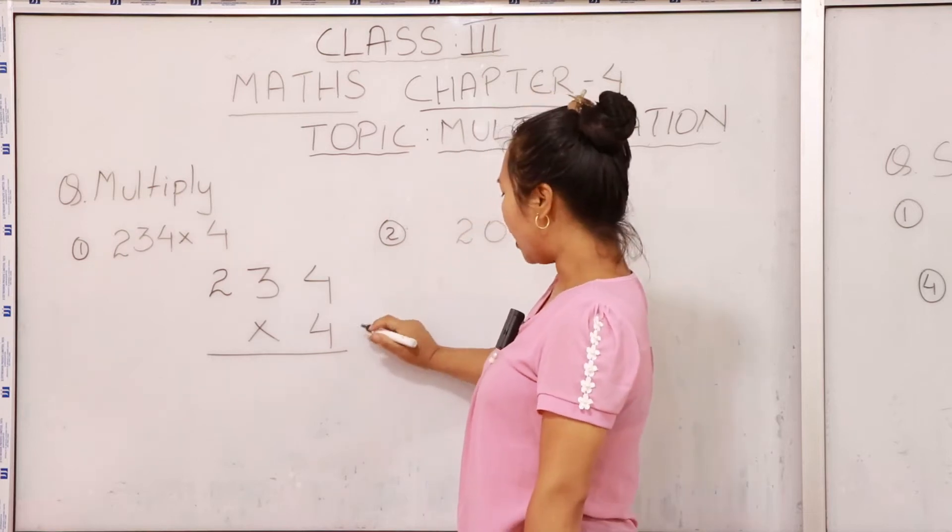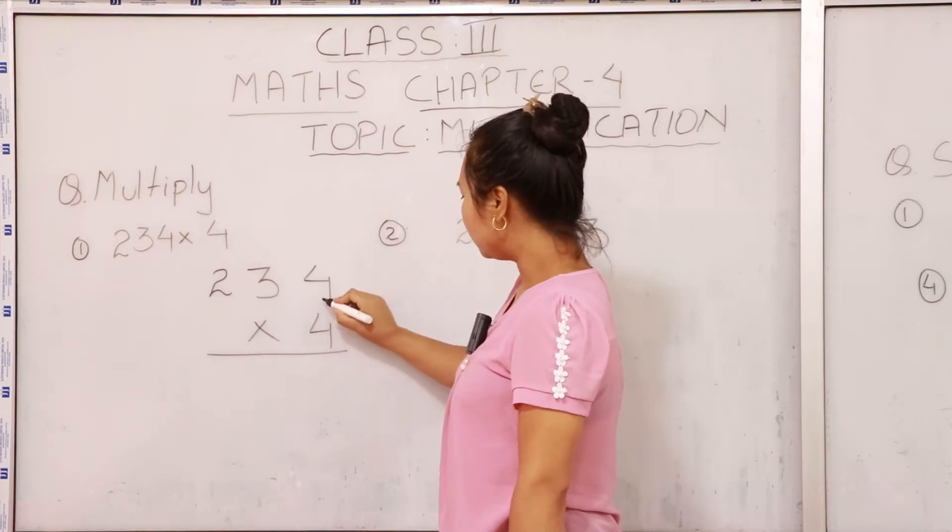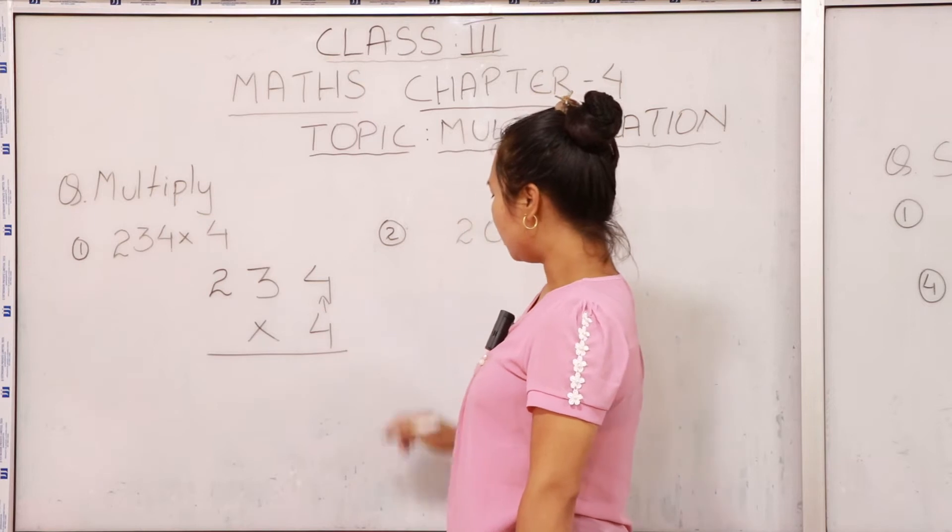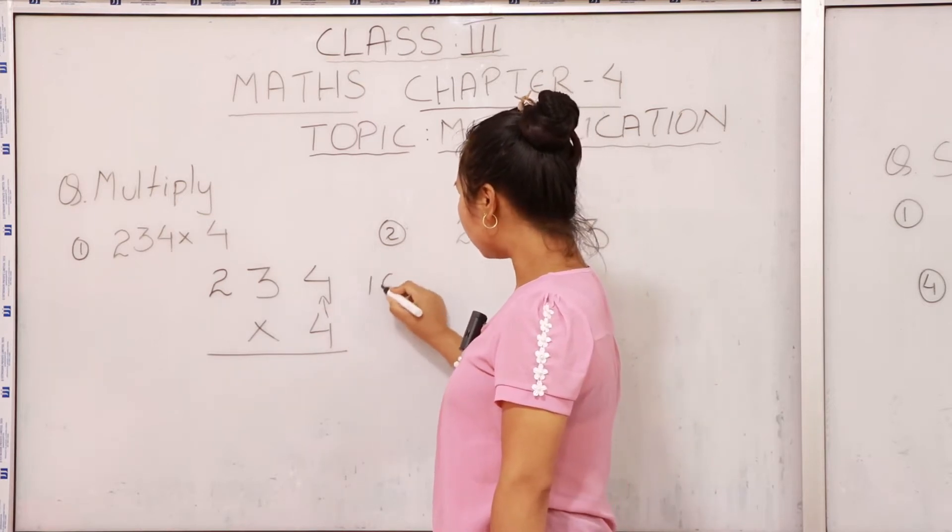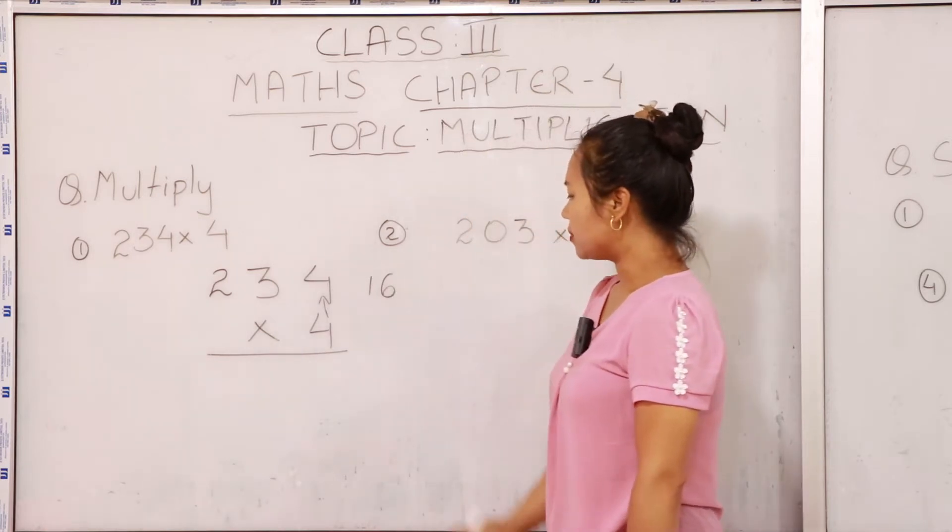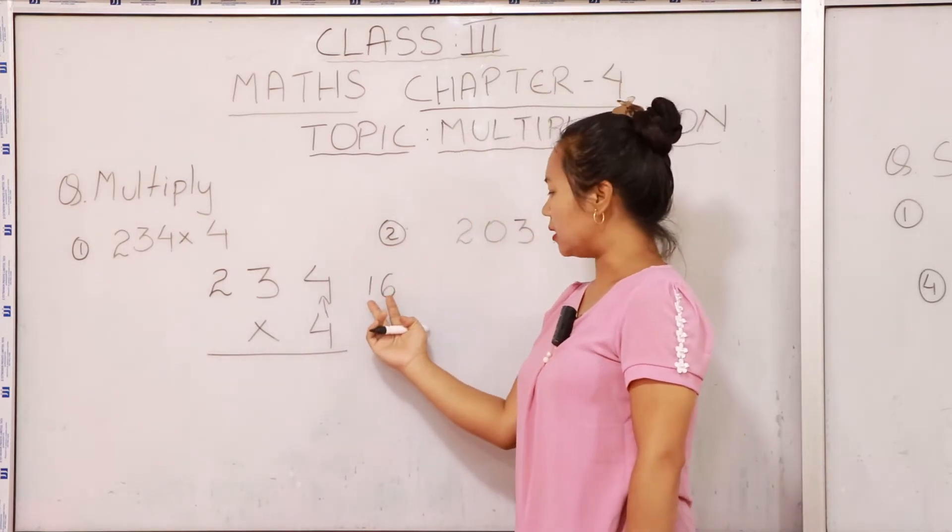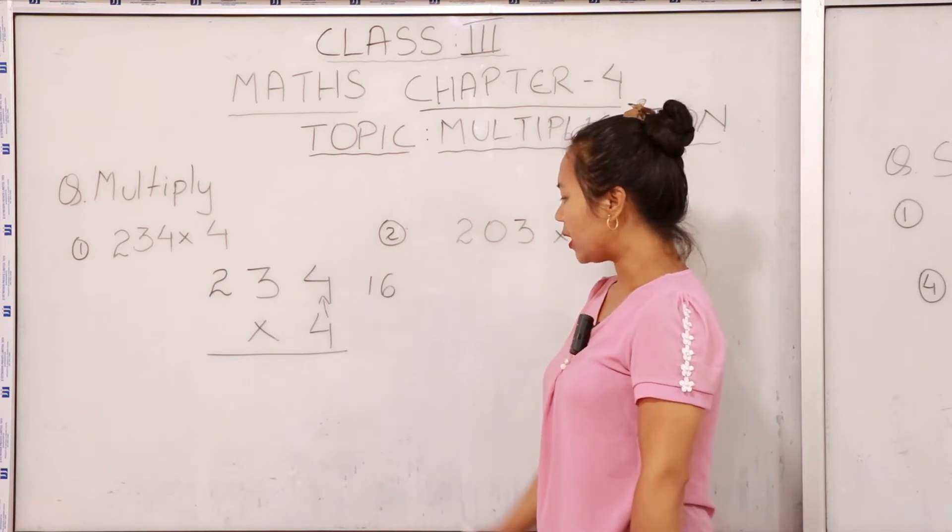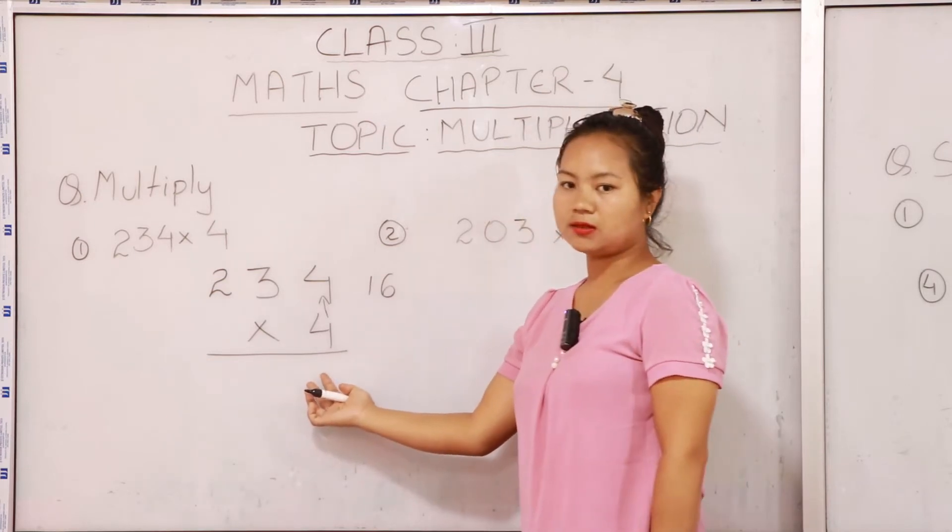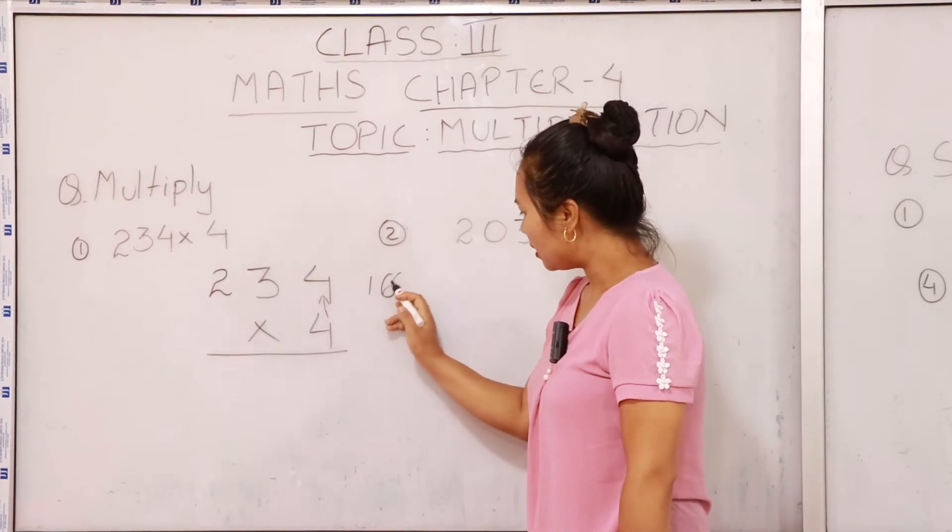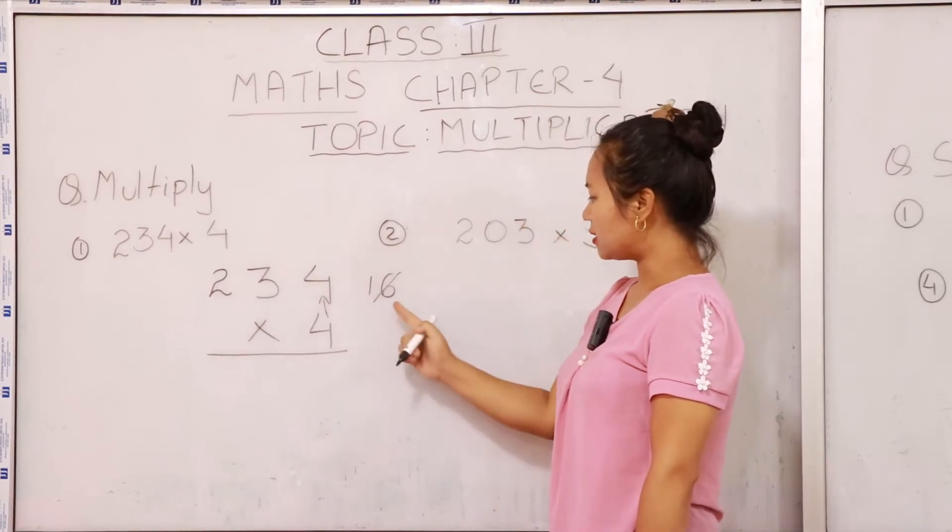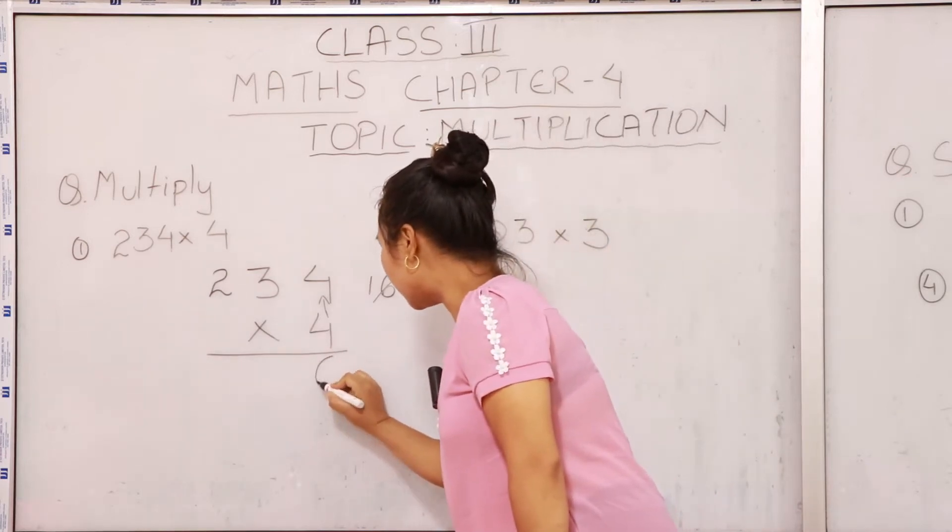So first we have to multiply these two numbers. 4 fours are 16. Let's write it down the outside first because it is 2 digits. So here we cannot write down both digits down here. So first we have to write down the first digit, that is 6. Let's write it down here, 6.